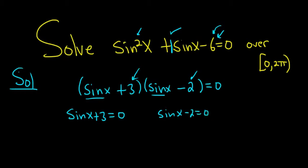We can solve this one for sine by subtracting 3 from both sides. Minus 3 minus 3. So we get sine x equals negative 3. Here we can add 2 to both sides. So we get sine x equals 2.